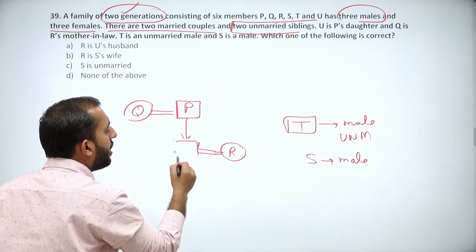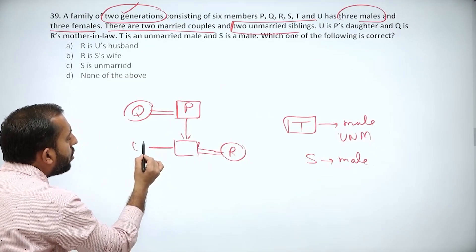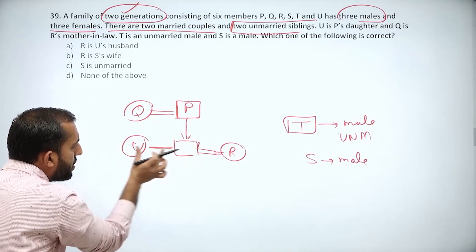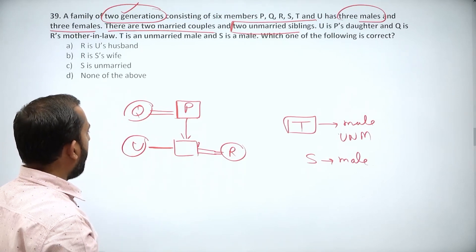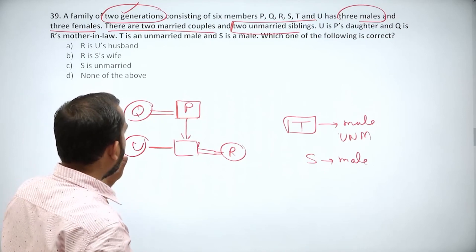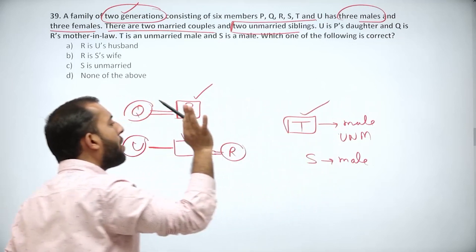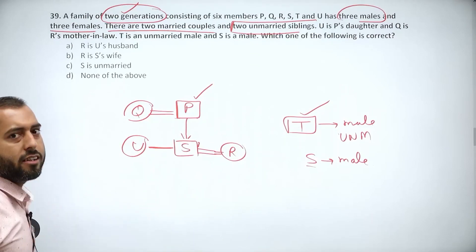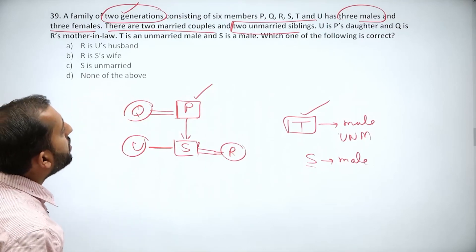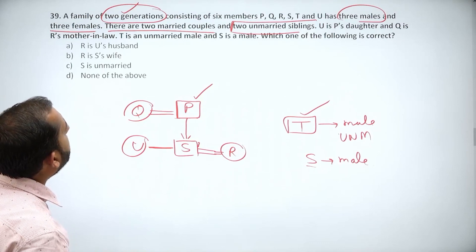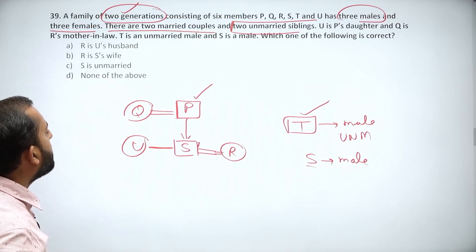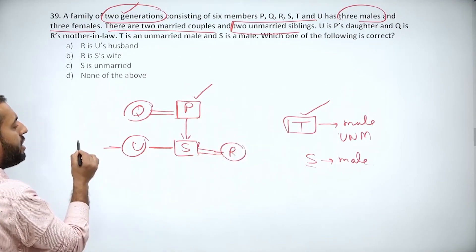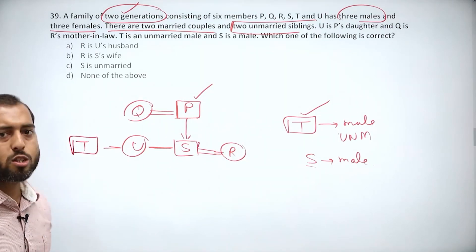U, the daughter of P, is the sister of another person we don't yet know. We have fixed P and U. We know two males: P and T. The third male is S, so S fills that remaining space. The two married couples are Q and P, and S and R. Therefore T and U must be the two unmarried siblings.